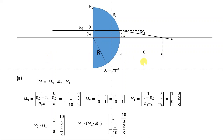For part a, as with how we build the matrix for an entire system, we have three matrices: one corresponding to refraction, one to translation, and one to refraction again. So M3 is refraction at the last surface, M2 is translation, and M1 is refraction at the first surface. We then write the matrices corresponding to M1, M2, and M3.